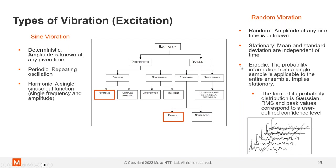Now, random vibration, it's random, as the name would imply. The amplitude can't be known at any one time. It is stationary though, so a mean and standard deviation are independent of time. It's ergodic. That means the probability of the information from a single sample is applicable to the entire group.